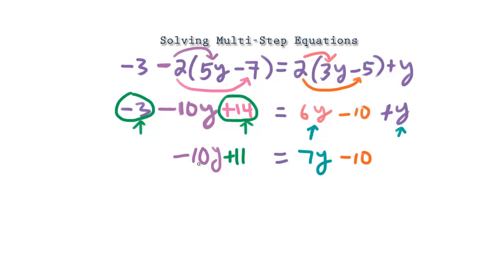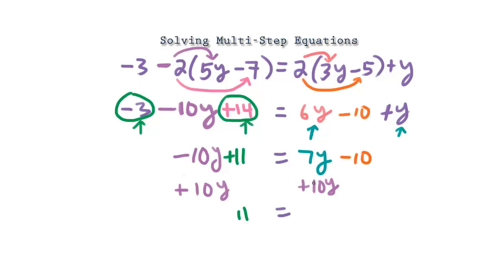It's probably easier to bring this negative 10y to the right-hand side. So we're going to add 10y to both sides. On the left we're left with just 11. On the right, 7y plus 10y gives us 17y, and we bring down the minus 10.